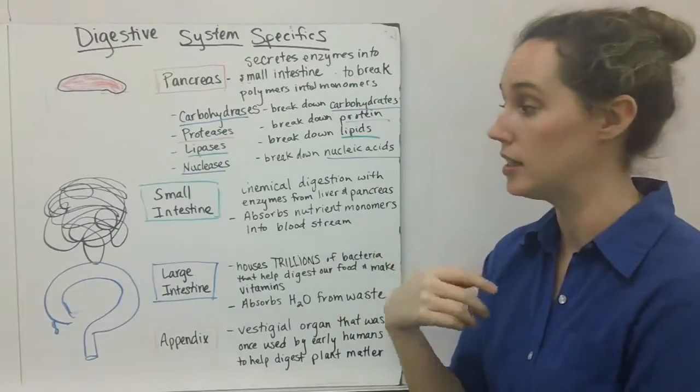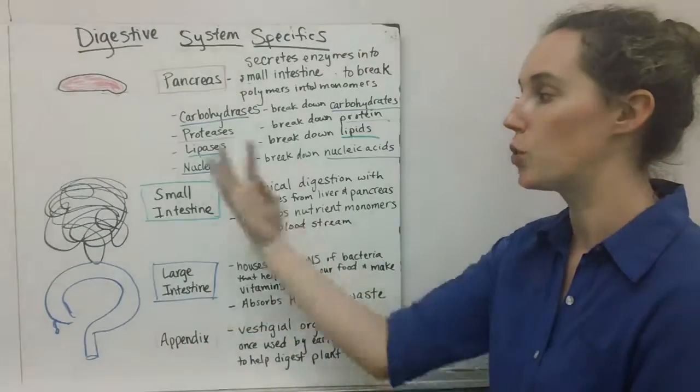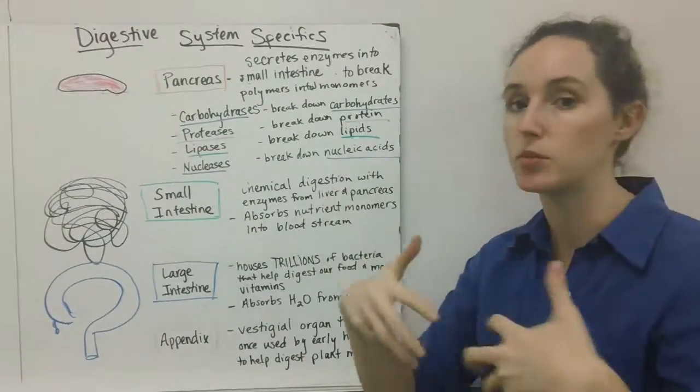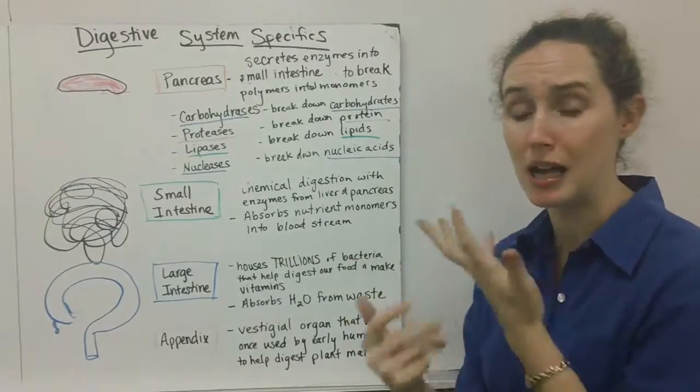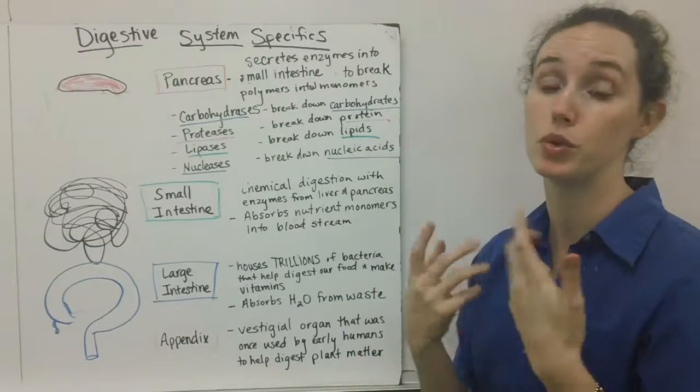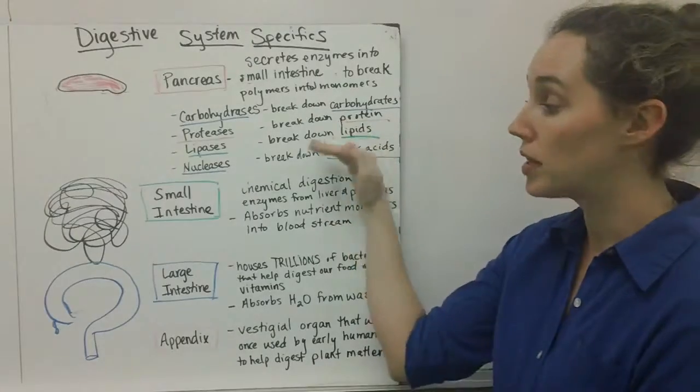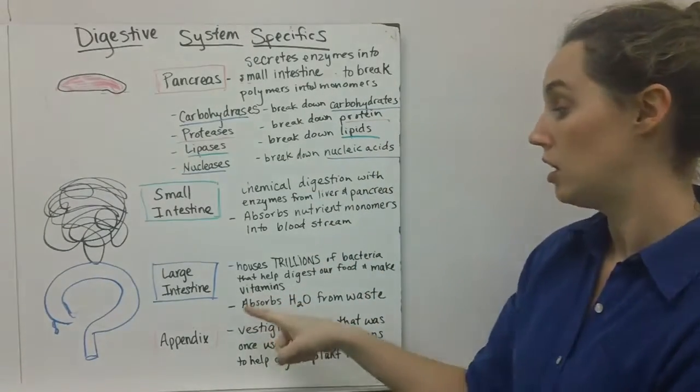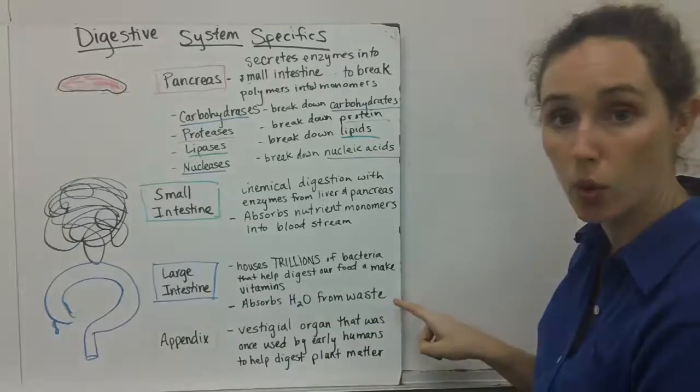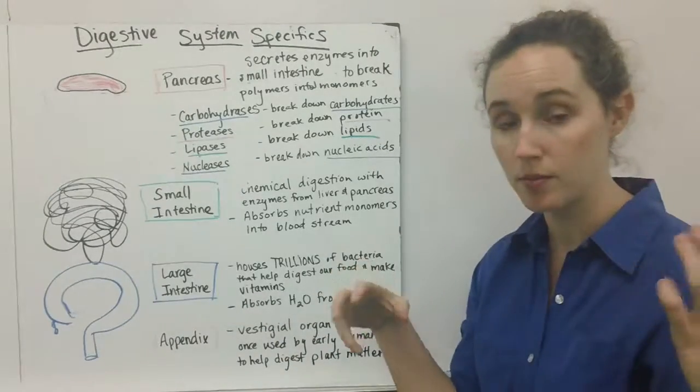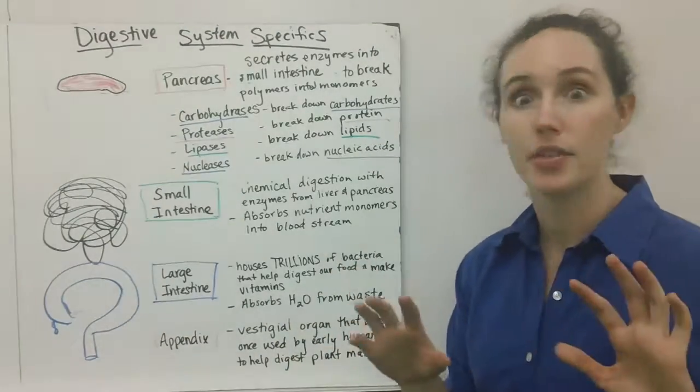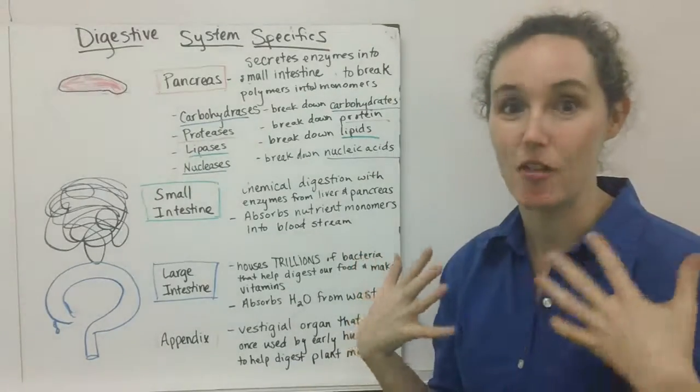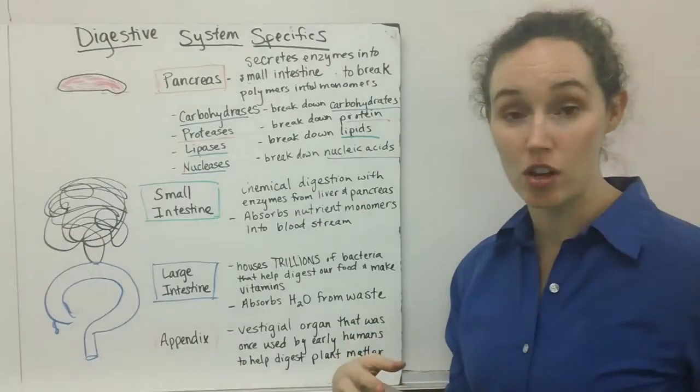Another absorptive organ is the large intestine. So once your food has been broken down a lot and those nutrients have been absorbed by your small intestine, you still have lots of other undigested food and liquids. That's going to move into the large intestine where water is going to be absorbed from that waste. I think it's the coolest: there are trillions of bacteria that live in your large intestine symbiotically, meaning you help them and they help you.